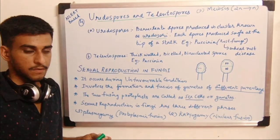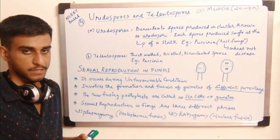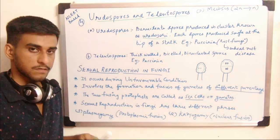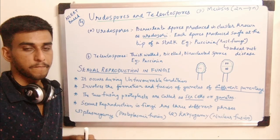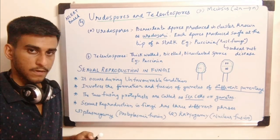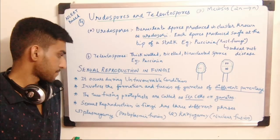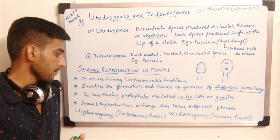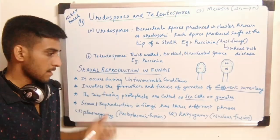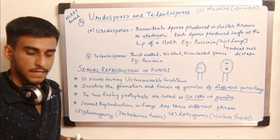Sexual reproduction requires two parents. It occurs during unfavorable conditions for fungi. For human beings we only reproduce by sexual method whether conditions are favorable or unfavorable. Sexual reproduction involves the formation and fusion of gametes from different parentage — gametes are produced in sexual reproduction.